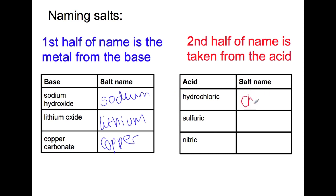So hydrochloric acid becomes chloride, sulfuric acid gives a sulfate salt, and nitric acid gives a nitrate salt. It's worth learning these second halves of the names.